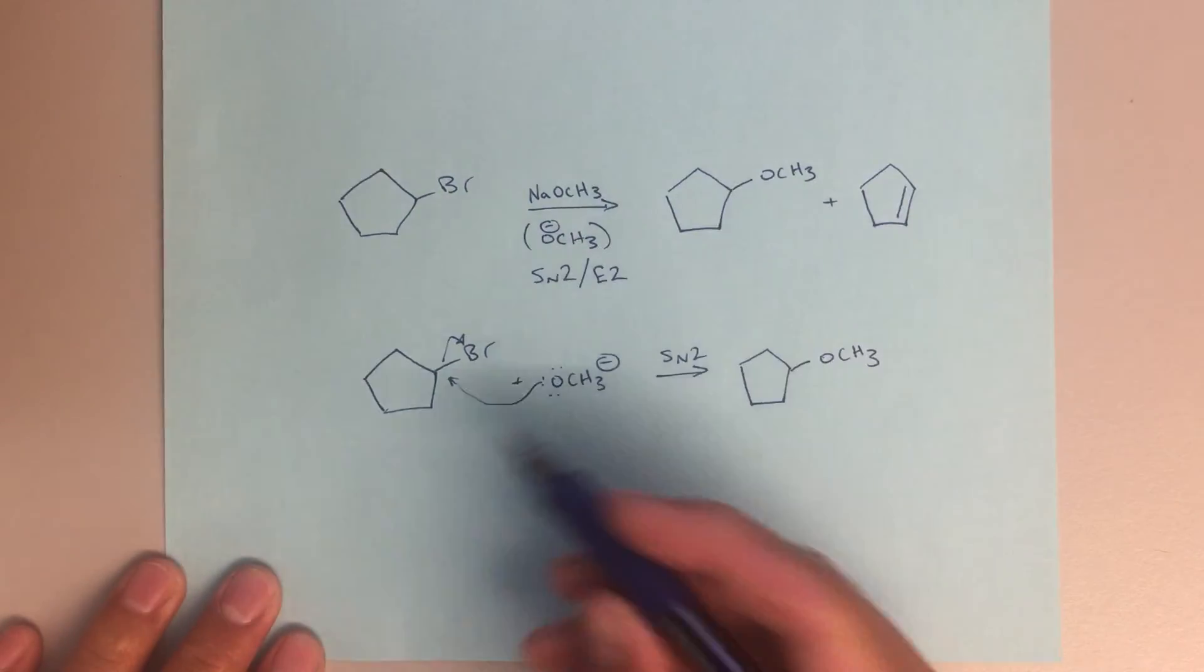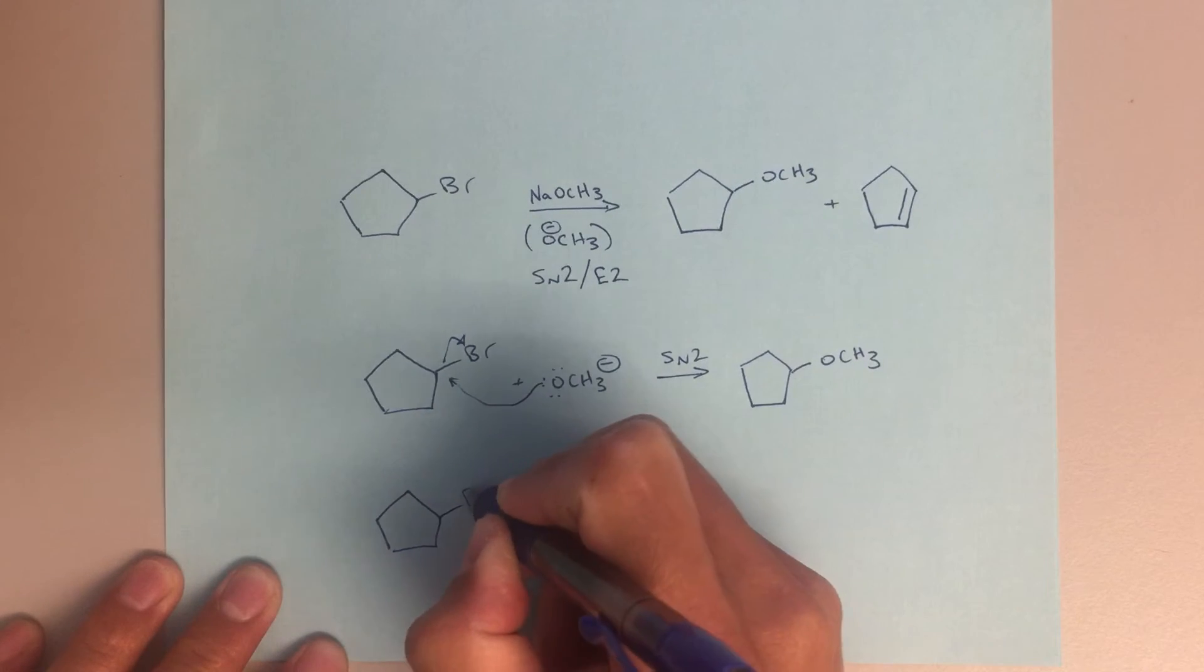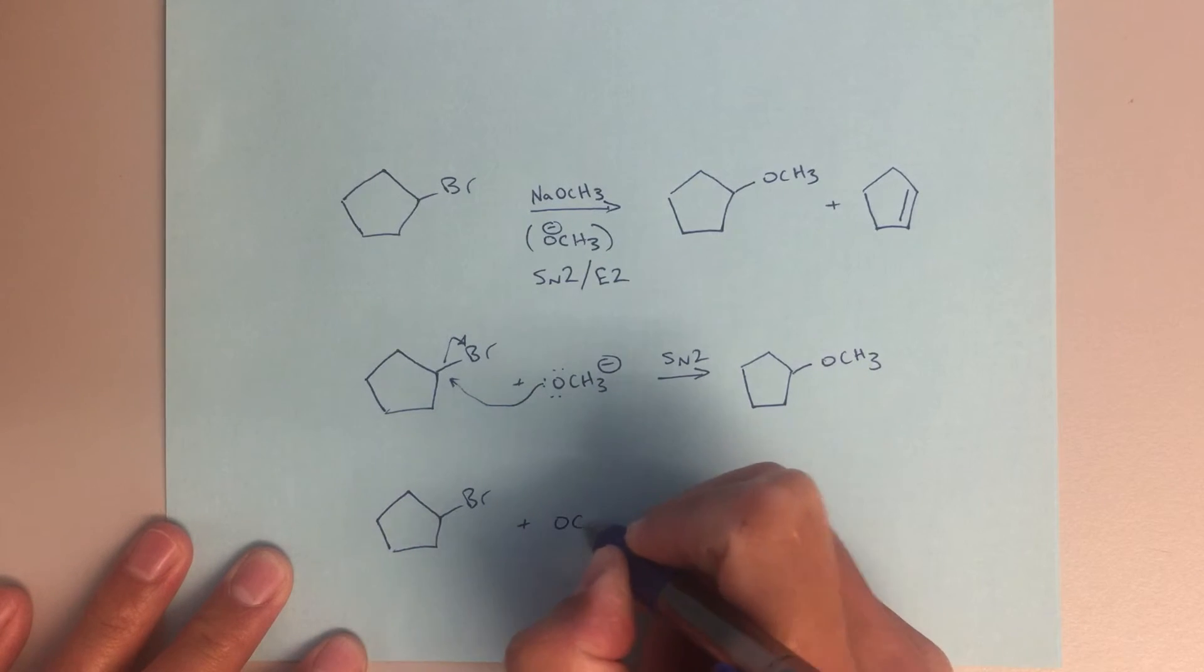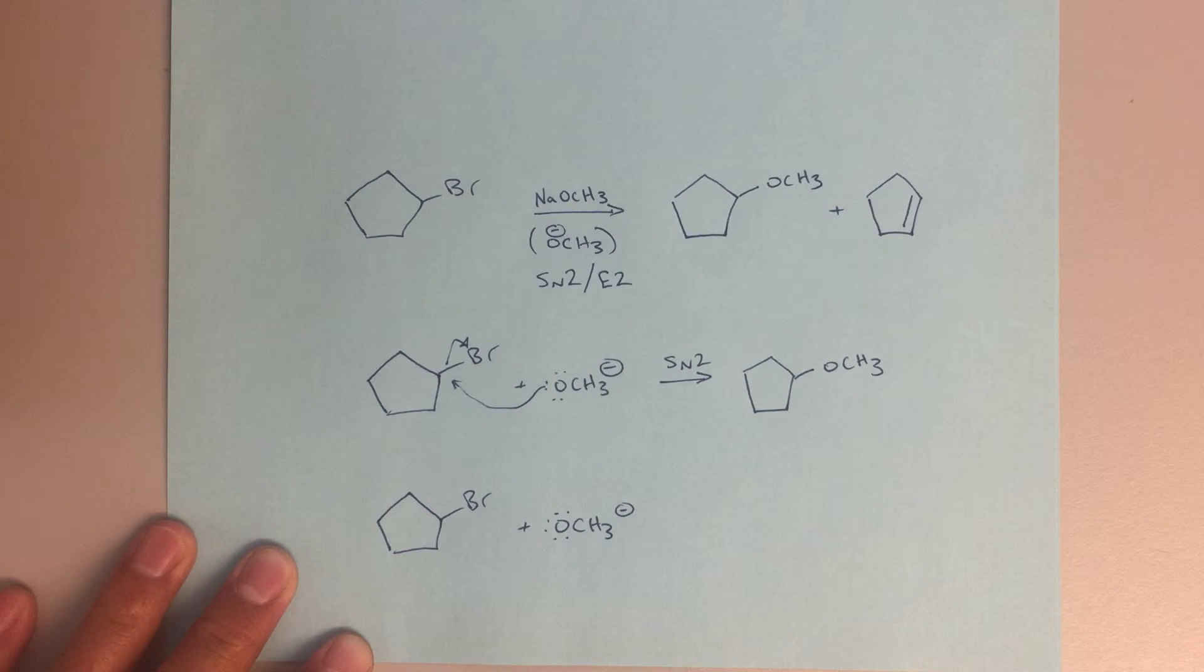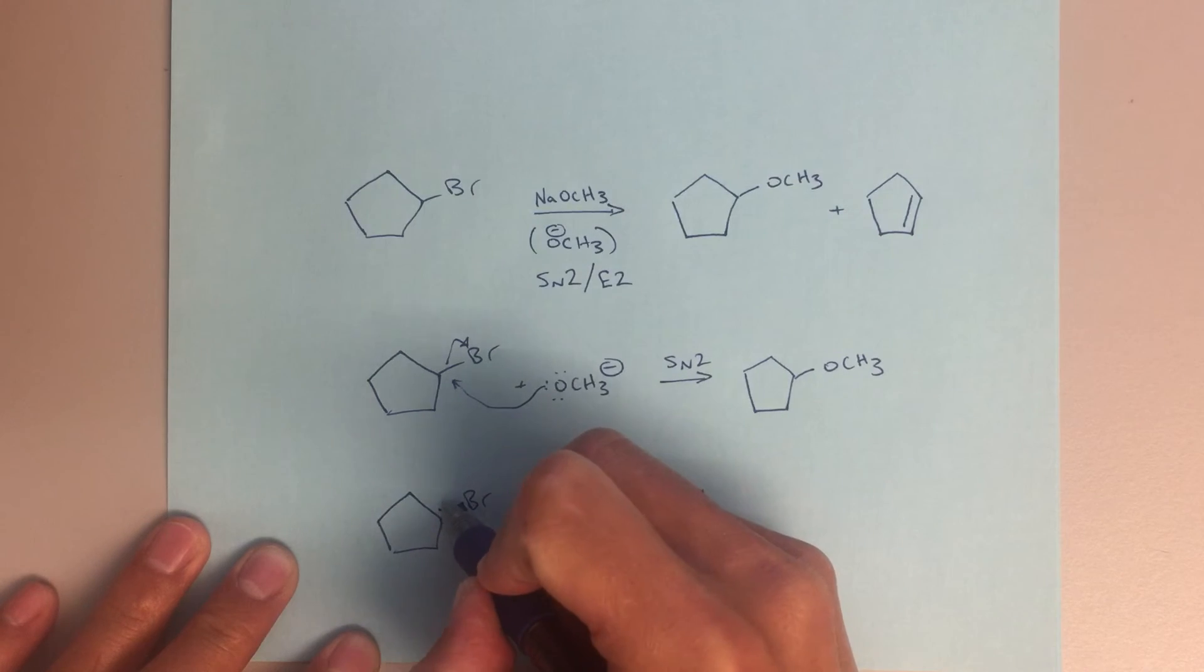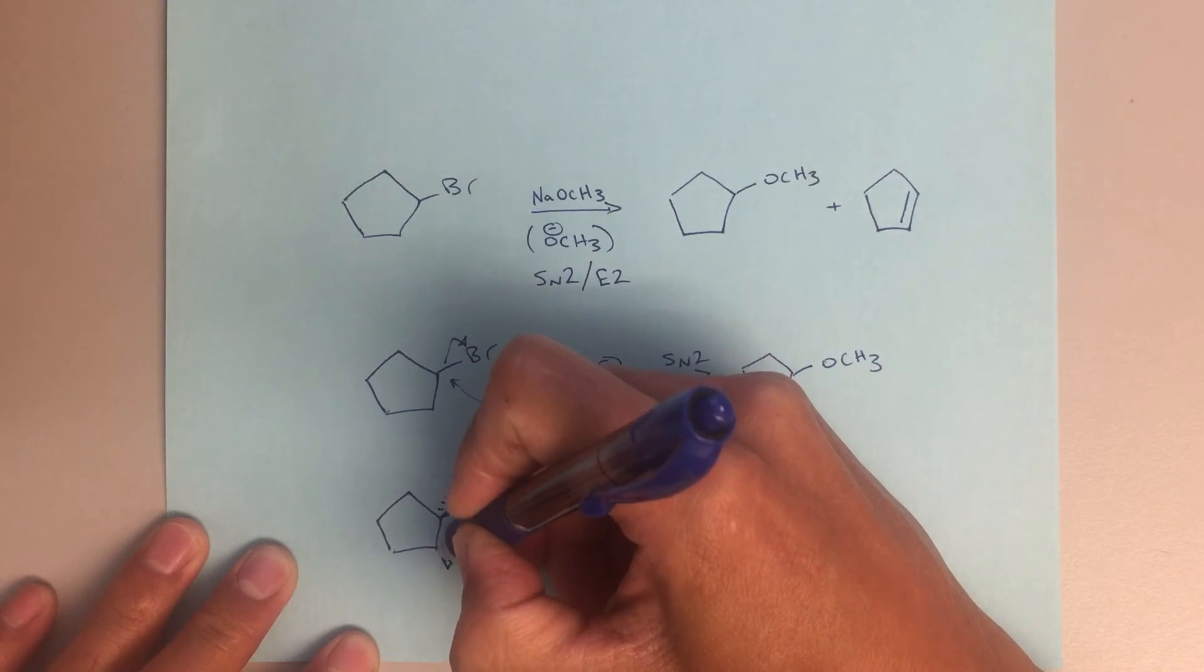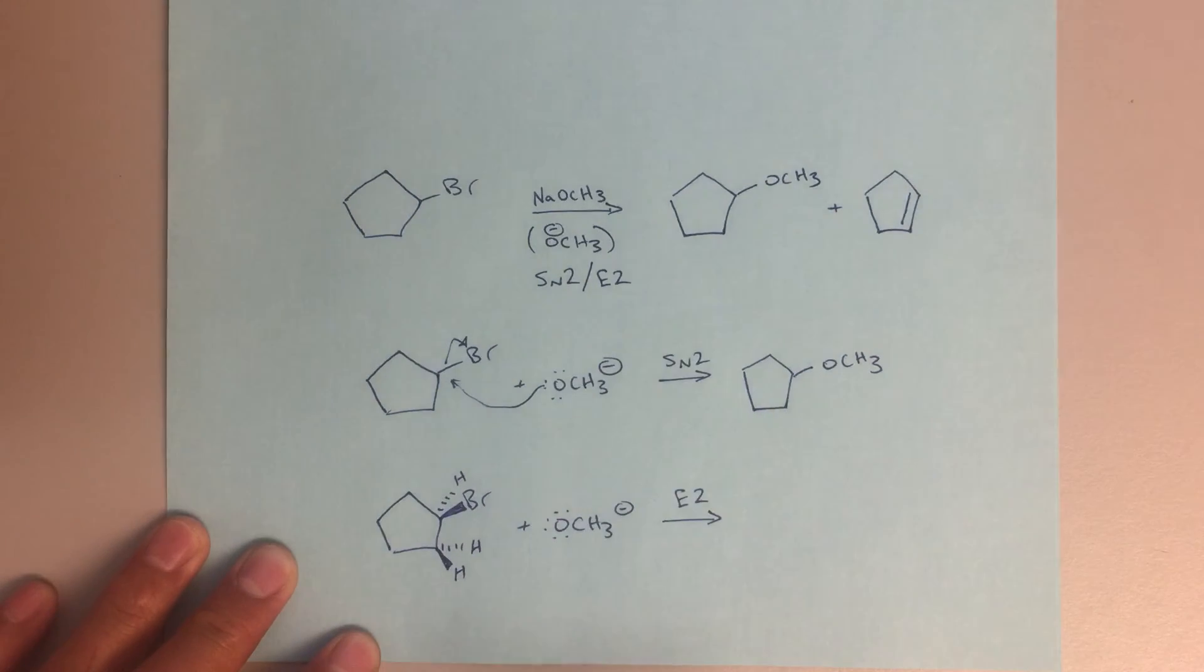For my second alkene product, this is going to be an E2 reaction mechanism. So what I want you guys to make sure you're thinking about is the stereochemistry involved with an E2 reaction. So here's my E2. So let's say this bromine is coming out. We'll put that hydrogen back there, and then we'll do a hydrogen here, and then another hydrogen here. So just for clarity.